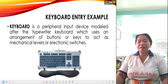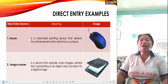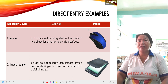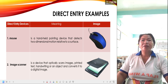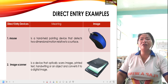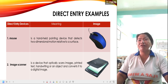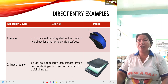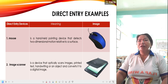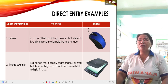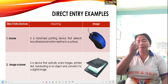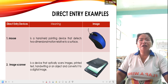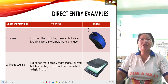The next one is direct entry. Examples of direct entry devices include the mouse, image scanner, digital cameras, and the joystick. First, the mouse — a mouse is a handheld pointing device that detects two-dimensional motion relative to a surface. There are a lot of designs of a mouse.